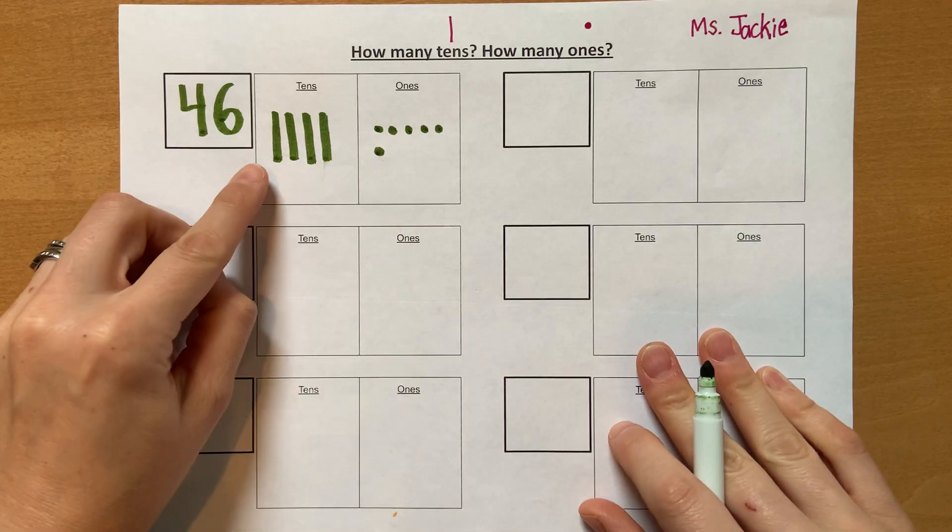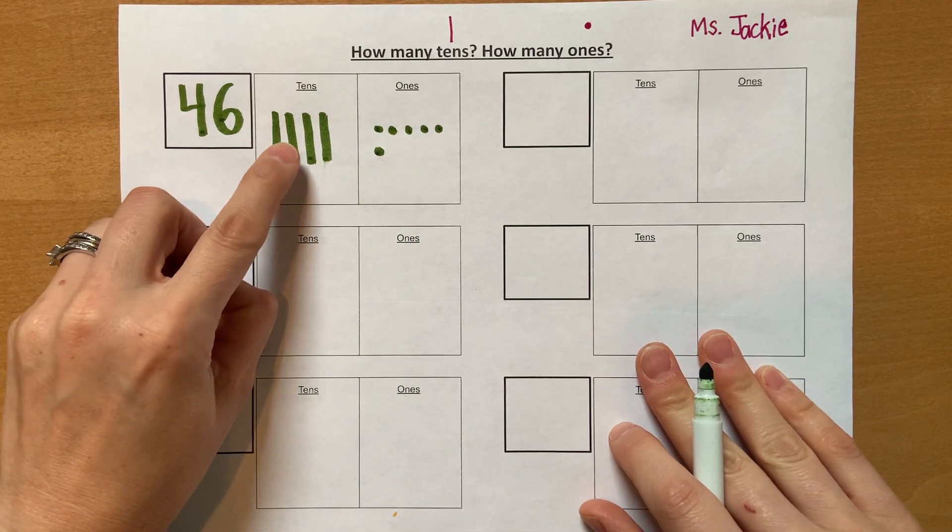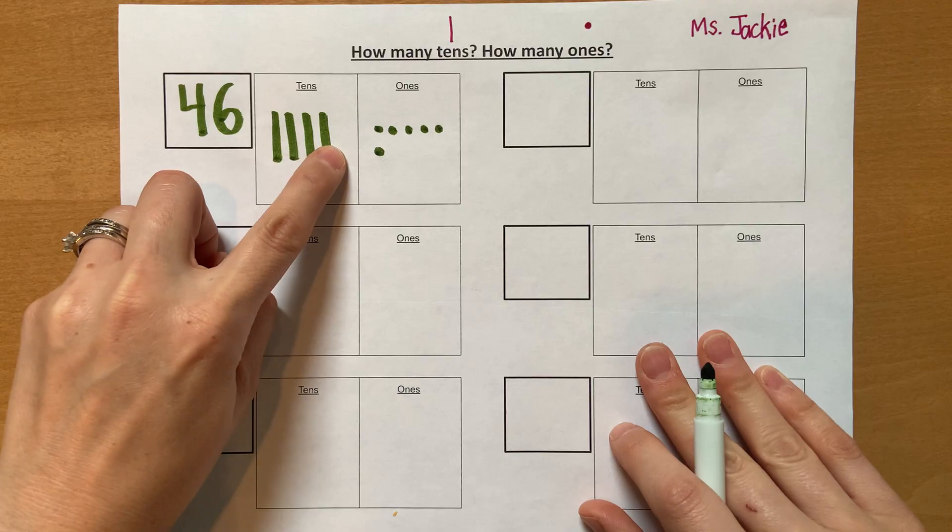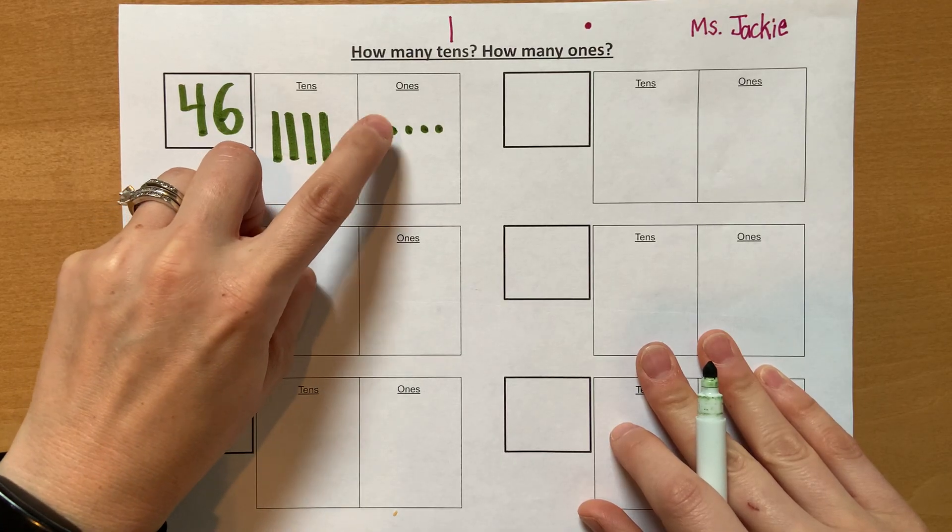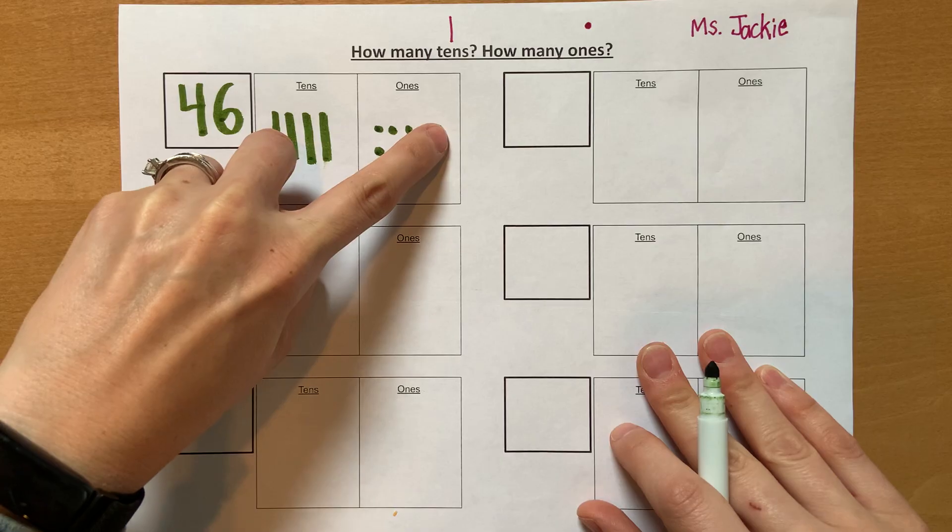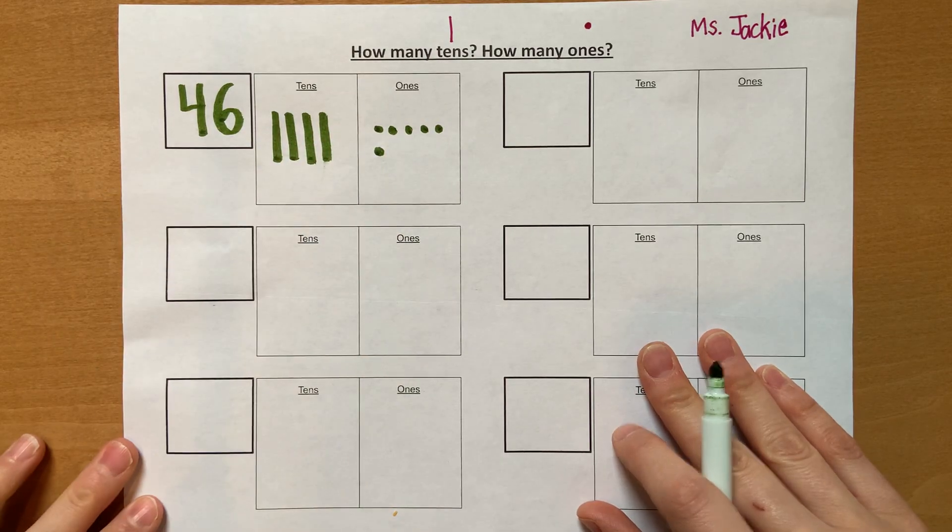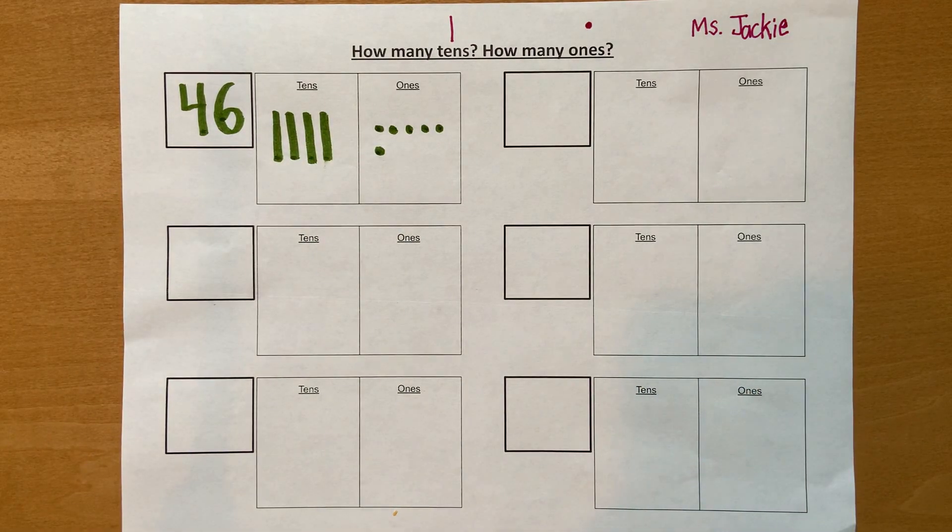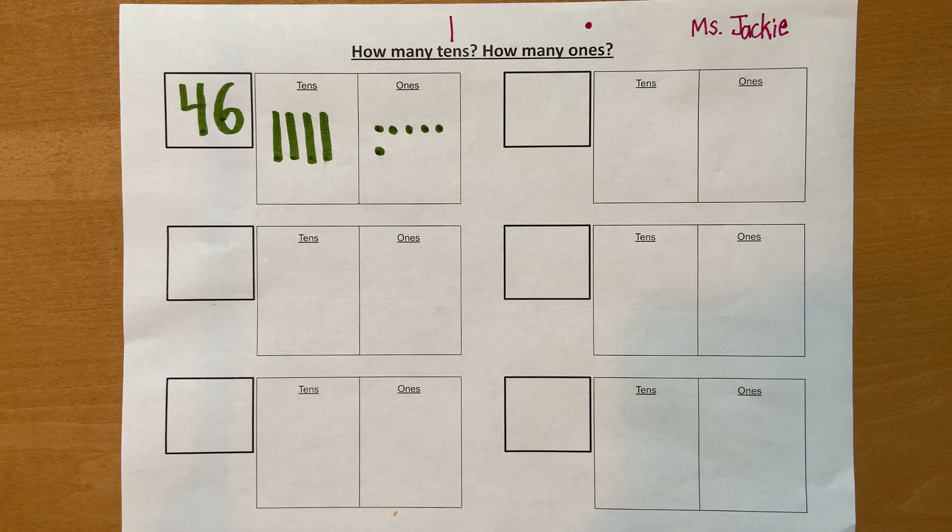If I want to count this, I go like this: 10, 20, 30, 40, 41, 42, 43, 44, 45, 46. Okay, let's go on and do another number. The next number we are going to do is 29.